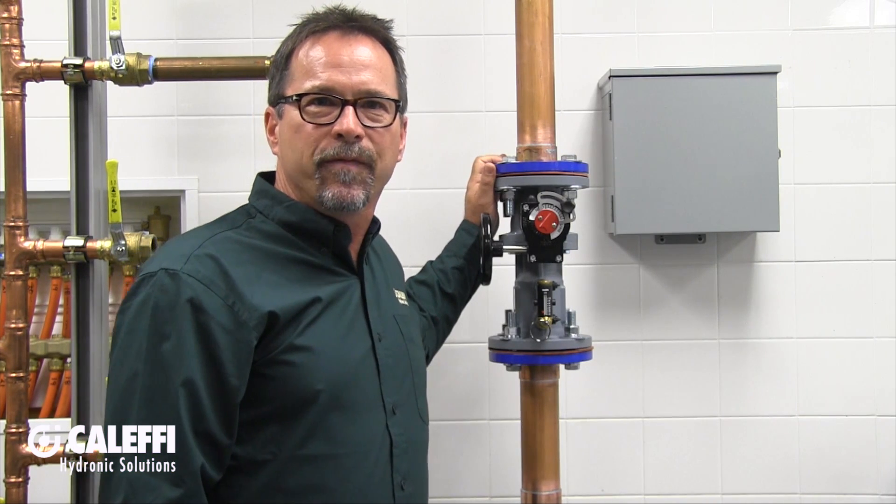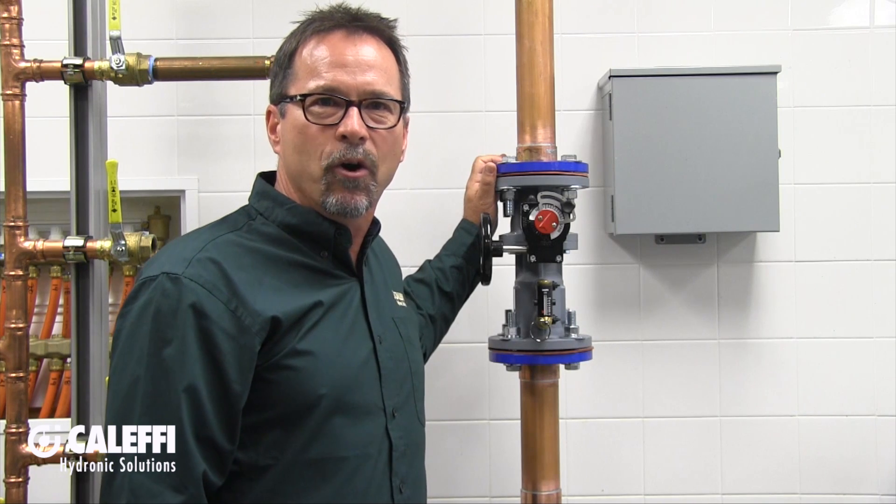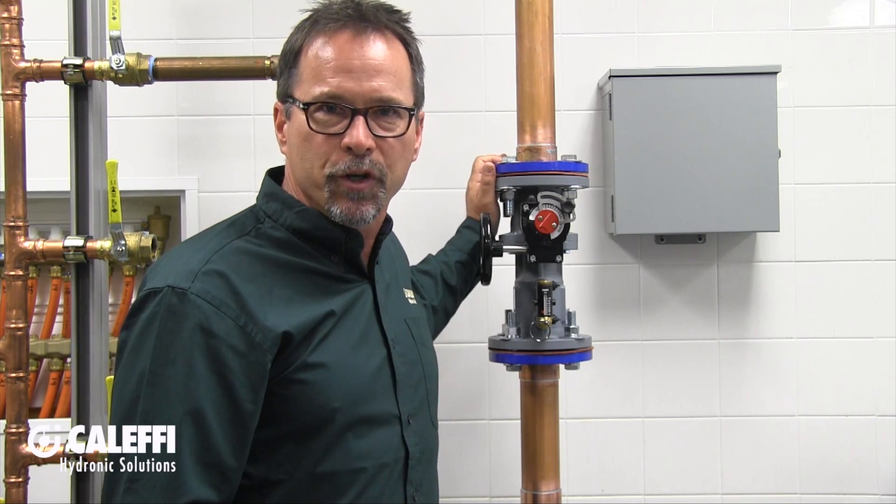This valve is used to balance fluid flow in hydronic heating or cooling system distribution piping. It comes in two and a half, three, or four inch flange sizes and,